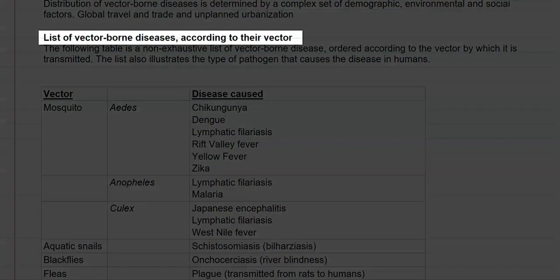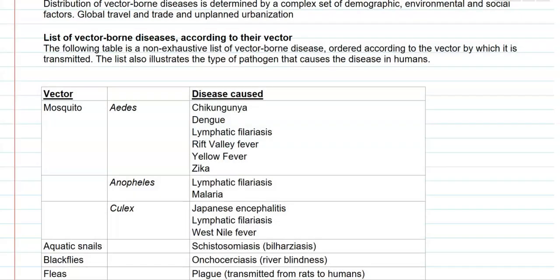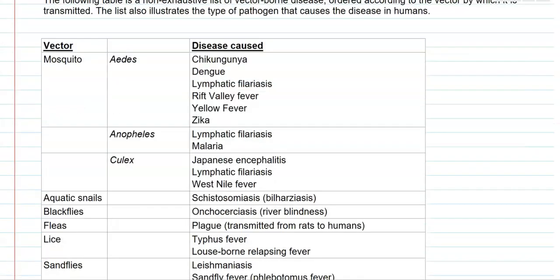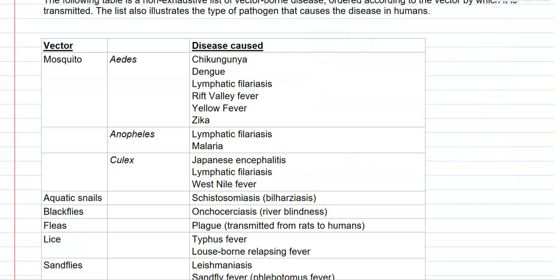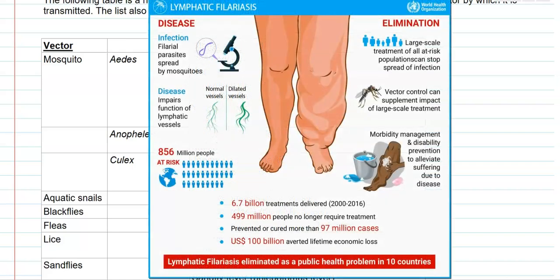Next we look at the list of vector-borne diseases — the name of the disease and their associated vectors. The first vector is mosquitoes. Three different genera of mosquitoes play a role as vectors. The Aedes group is associated with chikungunya, dengue, lymphatic filariasis, Rift Valley fever, yellow fever, and Zika virus. The Anopheles mosquito is the classical vector for malaria and is also associated with lymphatic filariasis.